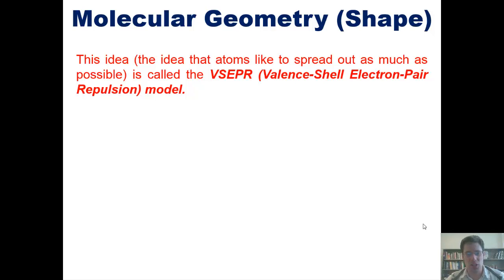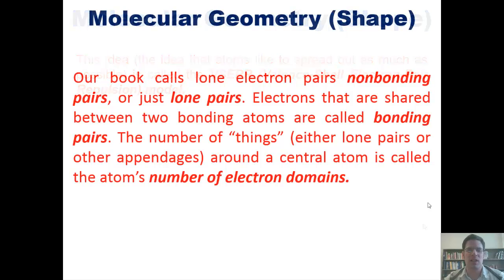Now parenthetically, just so you know this, our book sometimes calls lone pair electrons non-bonding pairs or just lone pairs. Electrons that are shared between two bonding atoms, in our book at least, are called bonding pairs. The number of things, either lone pairs or other appendages around a central atom, is called the atom's number of electron domains.